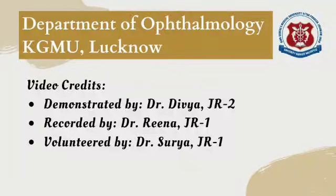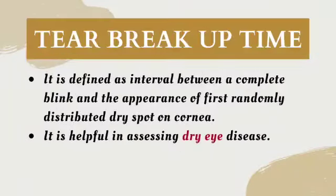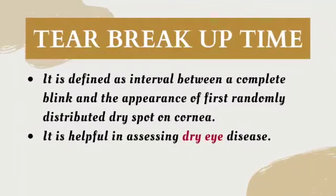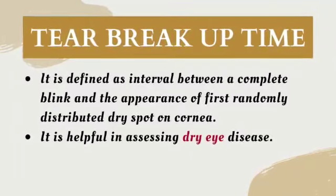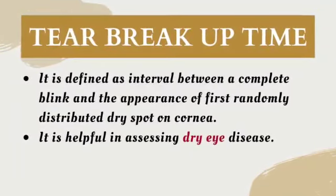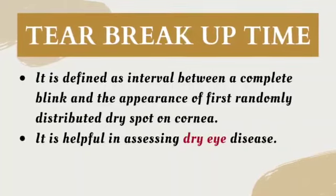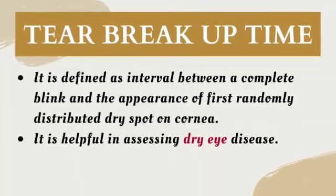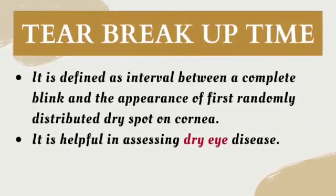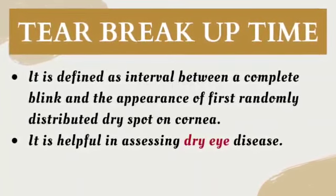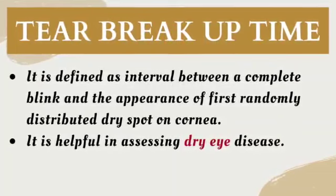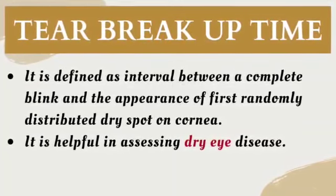Hello everyone, today we are going to demonstrate a video on tear film breakup time, i.e. TBUT. It is defined as an interval between a complete blink and the appearance of the first randomly distributed dry spot on the cornea. It is helpful in assessing dry eye disease.